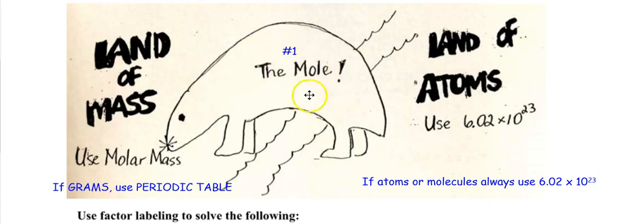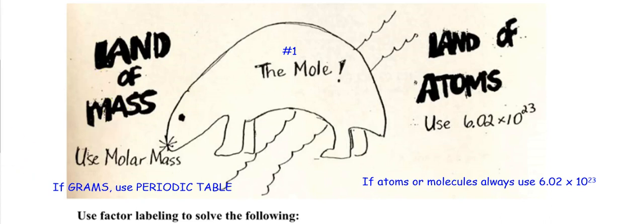You can think of it this way: there's only one mole, and that mole is number one. Every time you write down the word mole, it's one mole. So let's see how this works.